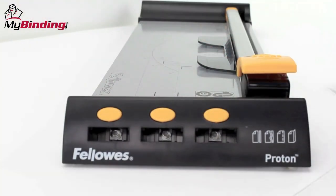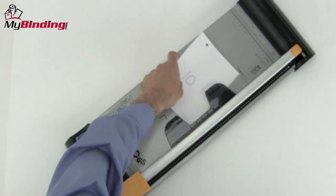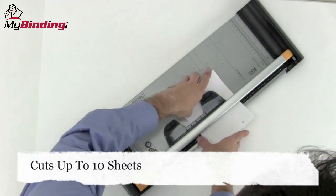The finger guard and paper holder slide up and down the blade mechanism so you can press exactly where you need. It has a cutting capacity of 10 sheets of 20-pound paper.